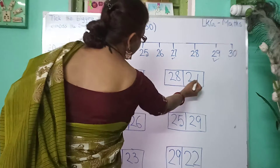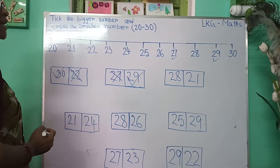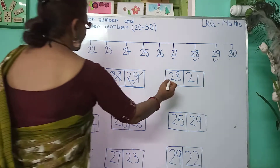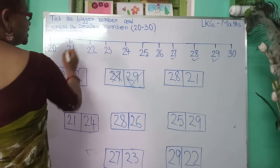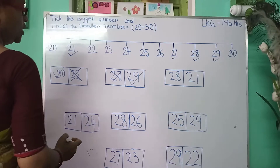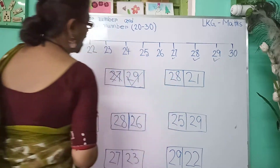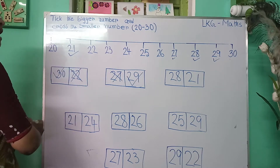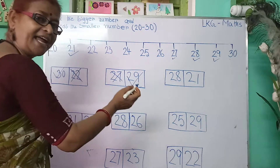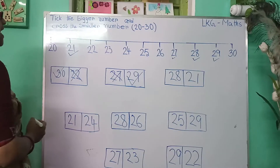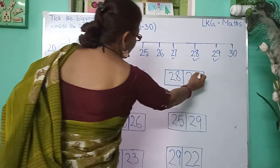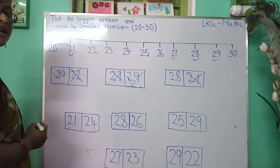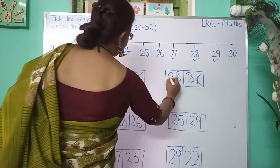Here, 28 and 21. Where is 28? Here is 28. And where is 21? Here is 21. In between 28 and 21, which have I written first? I have written 21 first, then 28. So, 21 is the smaller number, so I will put a cross. And 28 is the last number, so I will put a tick.